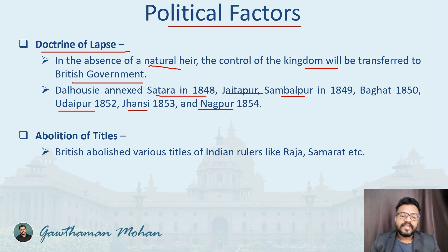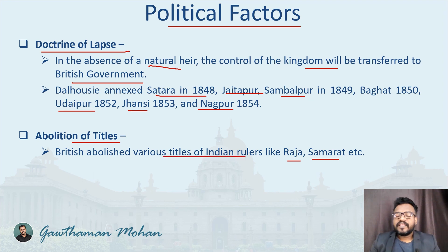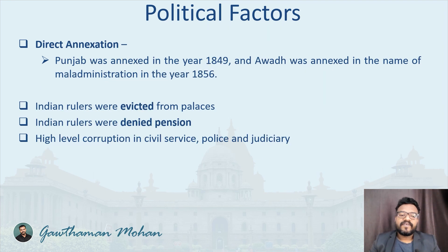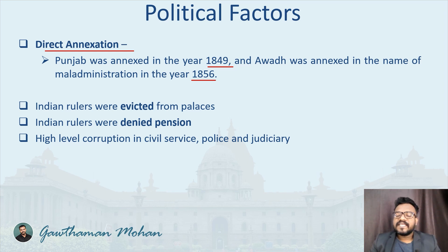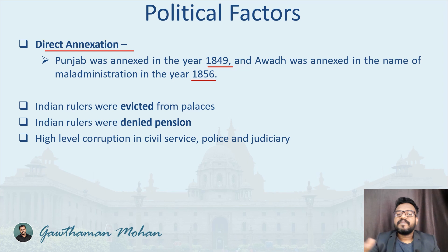Another important political problem was the abolition of titles. The rulers were given certain titles in India and those titles were abolished by the British administration — titles such as Raja, Samrat, and others. This was a humiliation for the Indian rulers. Another political factor was direct annexation: Punjab was annexed in 1849 and Awad was annexed in 1856. The reason given for annexing Awad was that maladministration and corruption were rampant, but the objective of the Britishers was to take ultimate control of Indian kingdoms.